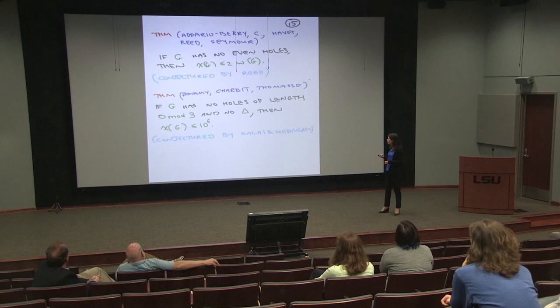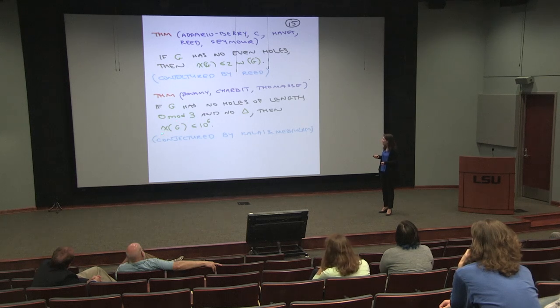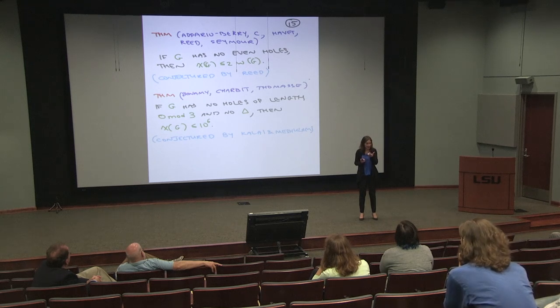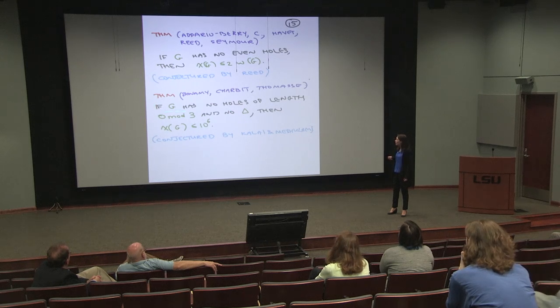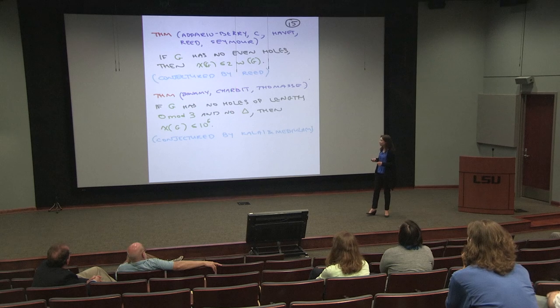There's another more recent theorem: if you forbid holes of length 0 mod 3, and you also forbid triangles separately, then the class you get is chi-bounded. The chromatic number is at most some constant — they conjecture it's 4, but the proof gives some larger constant. The proof here is different: they don't study the structure of graphs with no holes of length 0 mod 3 and no triangle; they directly prove the chromatic number is small. So there are two different flavours of approach to these problems.